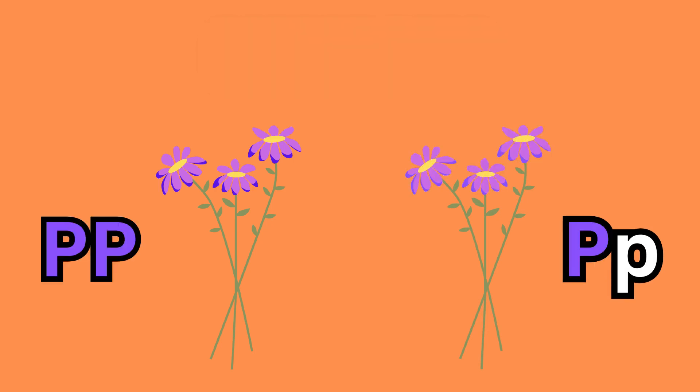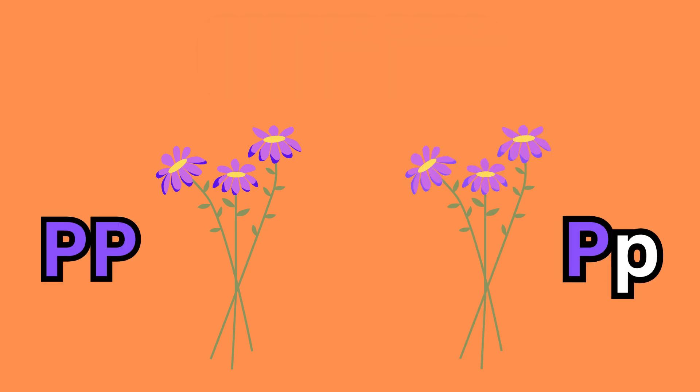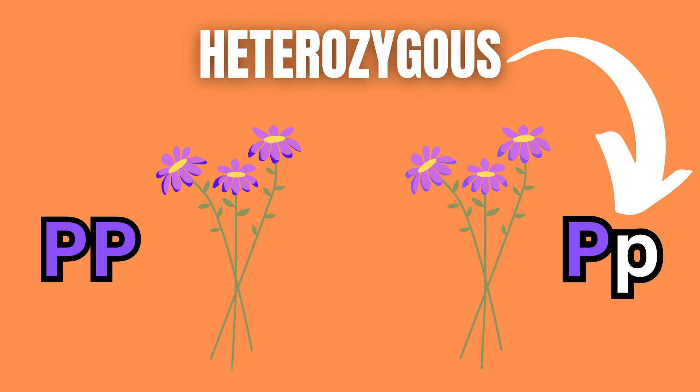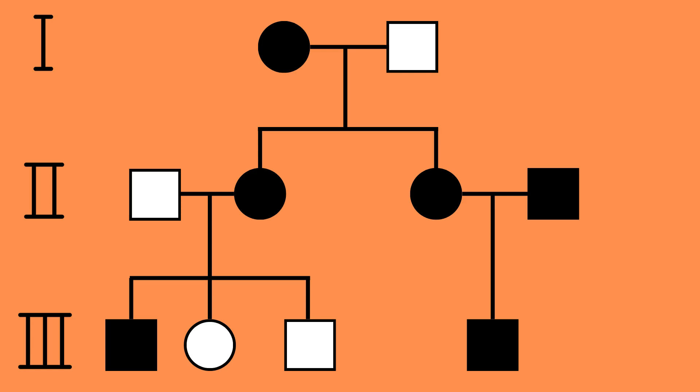When both alleles are the same, we call that homozygous. And when one is dominant and the other is recessive, we call that heterozygous. Let's look at an example to try to determine together if the trait is recessive or dominant.